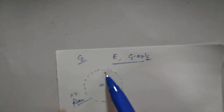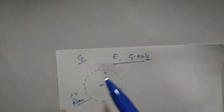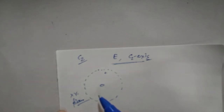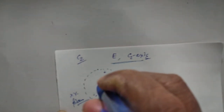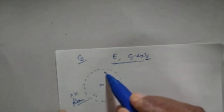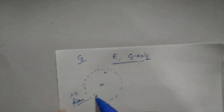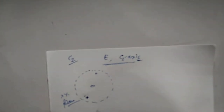When the operator E is applied, the point remains in place. When the operator C2 is applied, the actual point rotates through 180 degrees and comes to a new position. When it is projected, the projection goes to a new location — also indicated by a plus sign — by 180-degree rotation about the z-axis, which is the C2-axis perpendicular to the plane of the paper. This is the complete stereographic projection for the C2 point group.